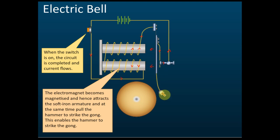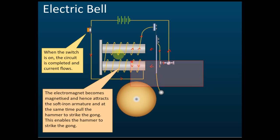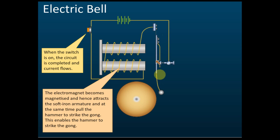The electromagnet pulls the soft iron armature and the hammer will strike the gong. When the hammer strikes the gong, it moves slightly and disconnects from the switch, breaking the circuit. When the circuit is disconnected, current stops flowing. The spring then pulls the hammer back to its original position, reconnecting the circuit, and current flows again, pulling the hammer to hit the gong once more.